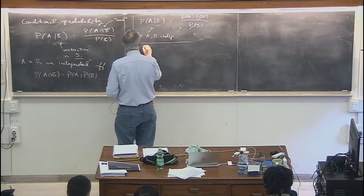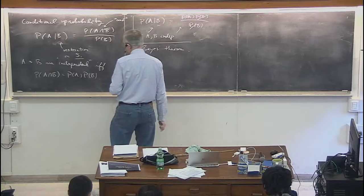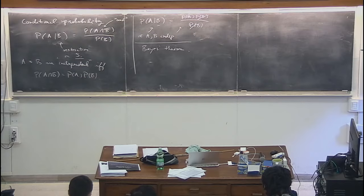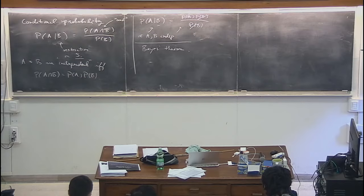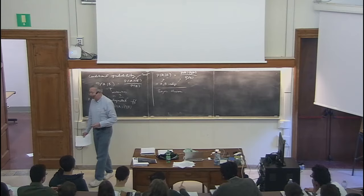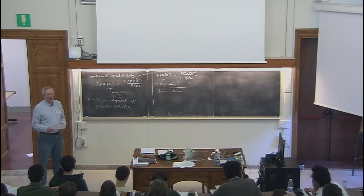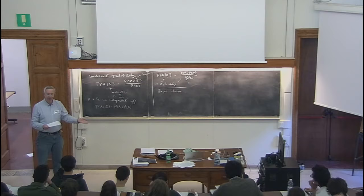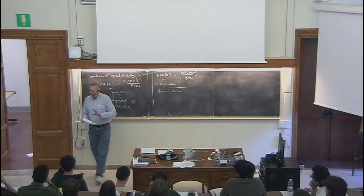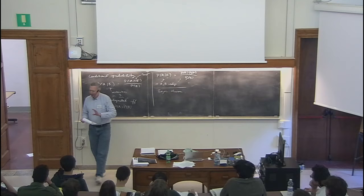Next: Bayes' theorem. An important theorem that is satisfied by anything you deem to call a probability, regardless of whether you interpret it as a frequency or a degree of belief, it has to satisfy Bayes' theorem. You may have heard there's some controversy between the frequentist school and the Bayesian school, and you might think that has to do with some disagreement about Bayes' theorem — but that's not true. Bayes' theorem is a theorem, and we can derive it in less than 60 seconds. So let's do that.